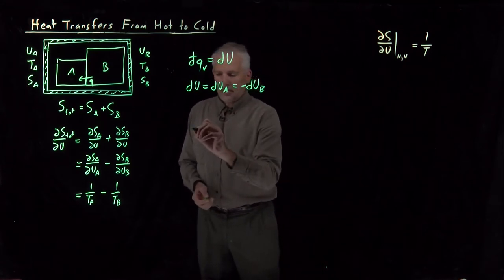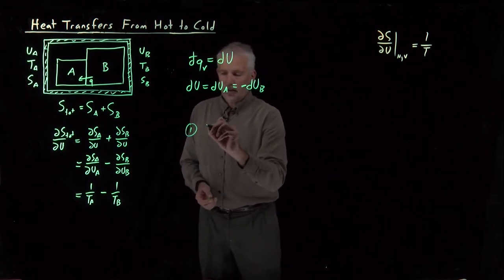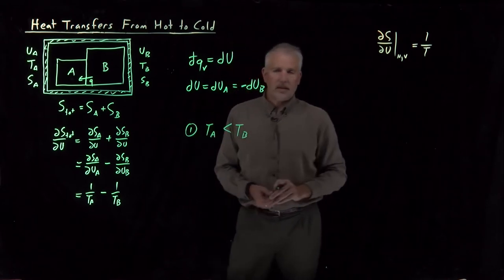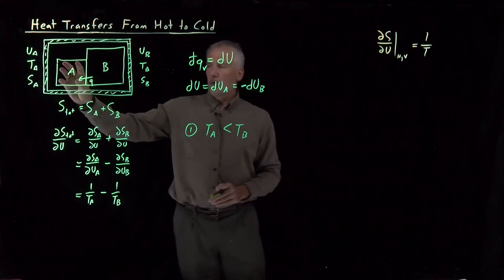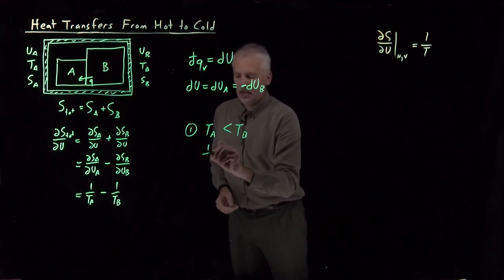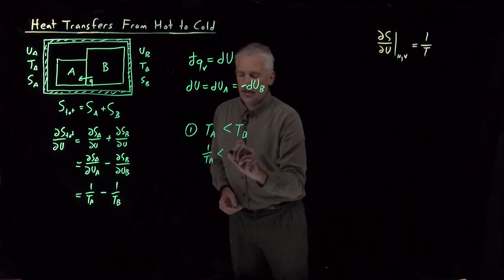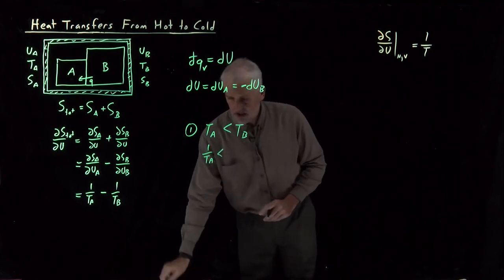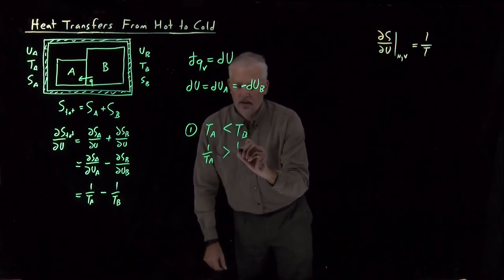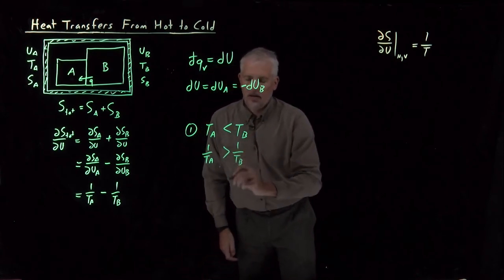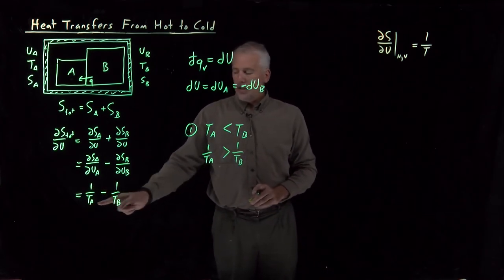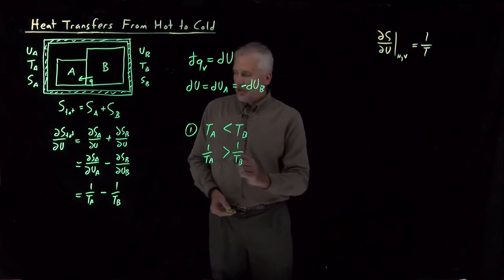So let's consider a couple of cases. Let's consider, first of all, what if the temperature of system A is less than system B? System A is colder than system B, which is warmer. In that circumstance, 1 over the temperatures, the sign changes. So 1 over TA is in fact greater than 1 over TB.